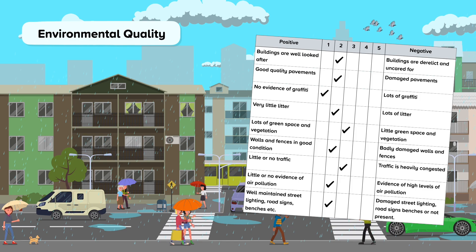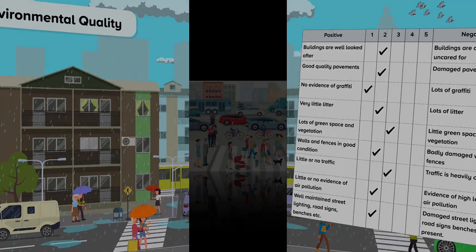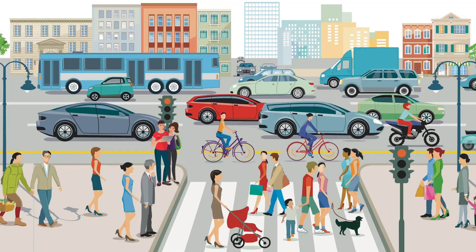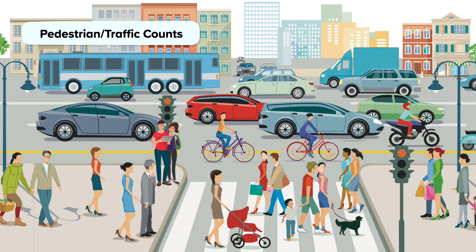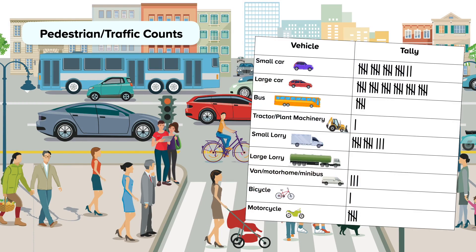Another quantitative technique is a pedestrian or traffic count. These involve counting how many vehicles or people pass a predetermined point within a time frame. Directions can also be specified, for example towards town or out of town.